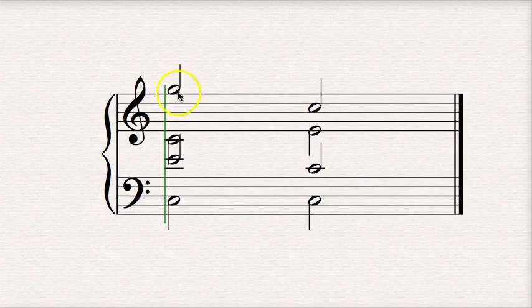Soprano line is at G5, while the alto is at C4. That's certainly greater than an octave. And the rule that you want to follow is that the soprano and alto, or the alto and tenor, each pair of voices, will never be more than an octave apart.